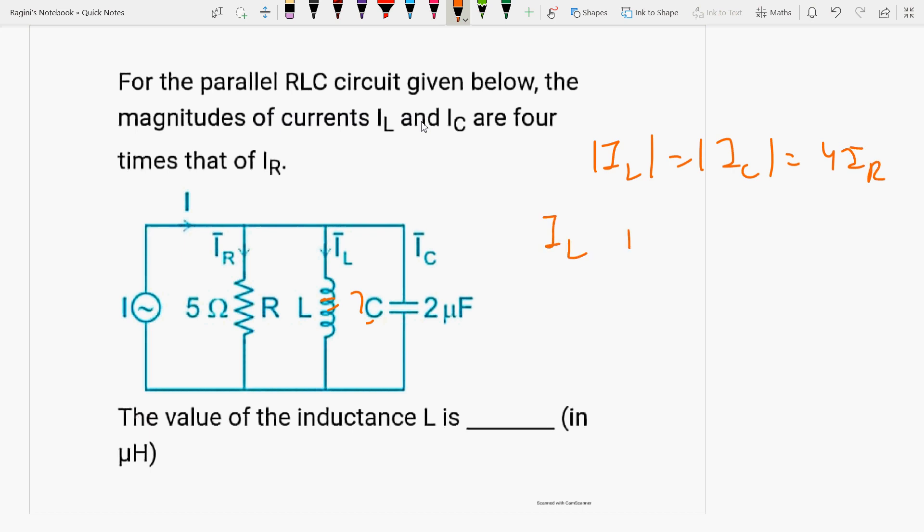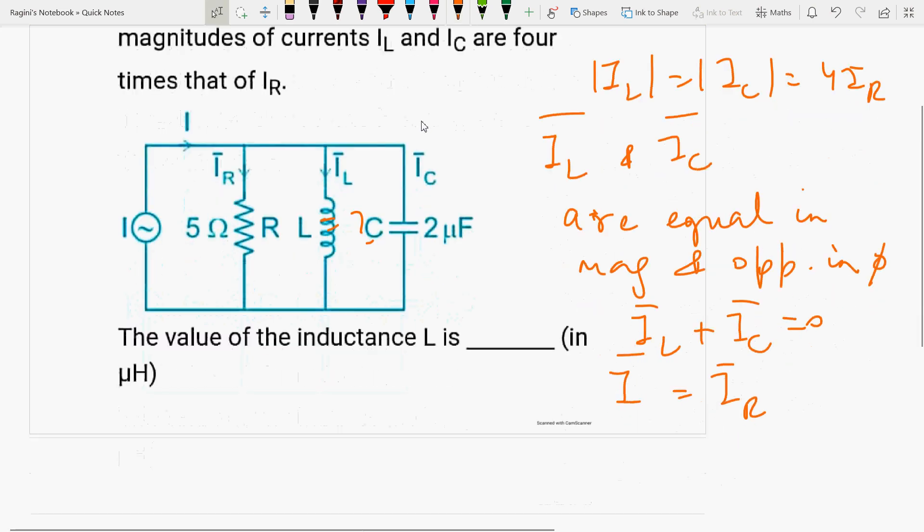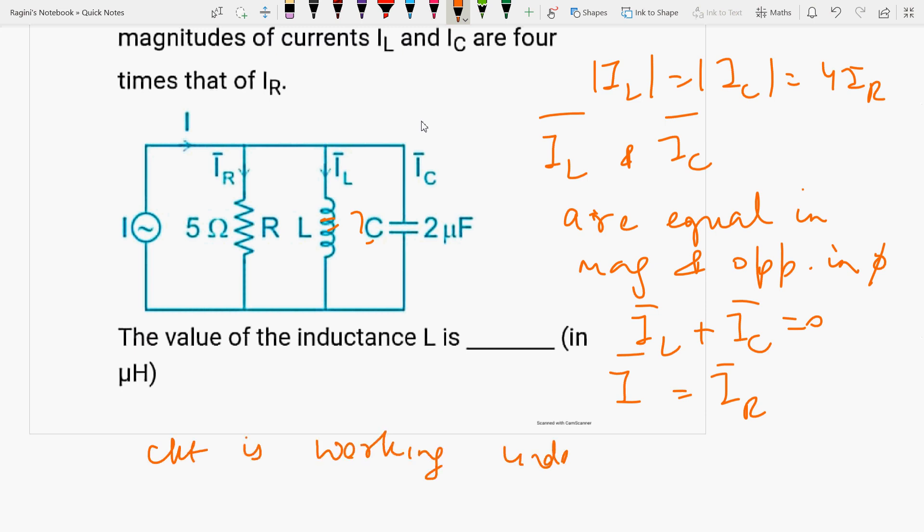So because IL and IC are equal in magnitude and opposite in phase, they are equal in magnitude and opposite in phase. So IL plus IC equals zero, so I equals IR. The circuit is working under the resonance condition. The circuit is working under resonance condition.